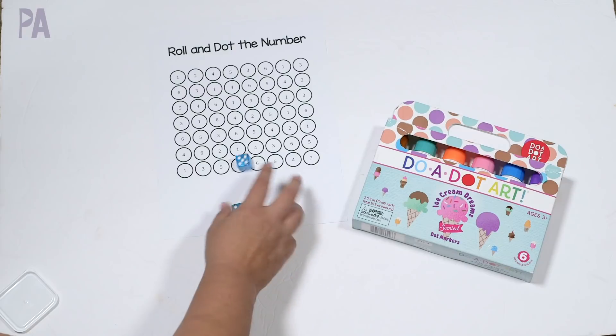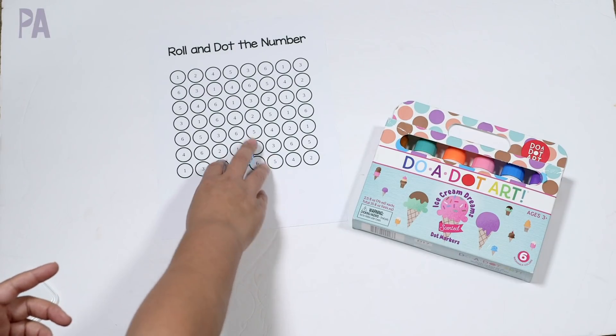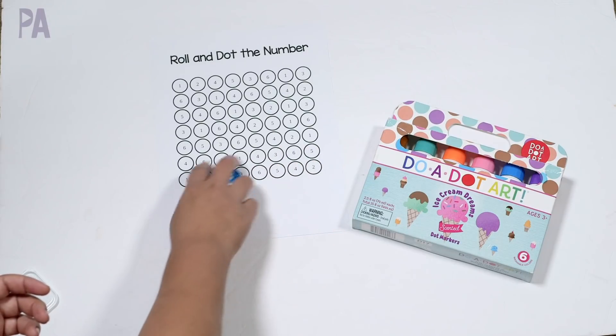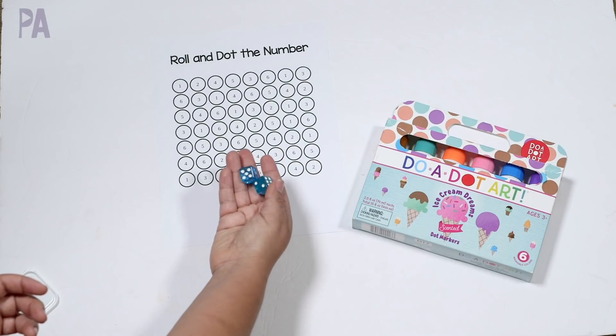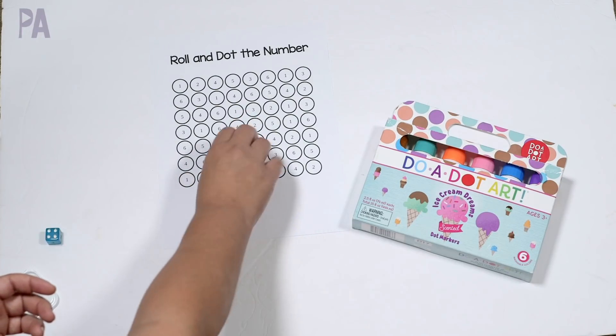So if your child already knows numbers, you know, they just kind of, this might be an easy thing for them. You can make it harder by using a timer, making it time. How fast can you do it? How many rolls can you get in and dot everything? But if your child's just learning numbers and number recognition with the dots on the dice, then you would just basically roll and then dot.